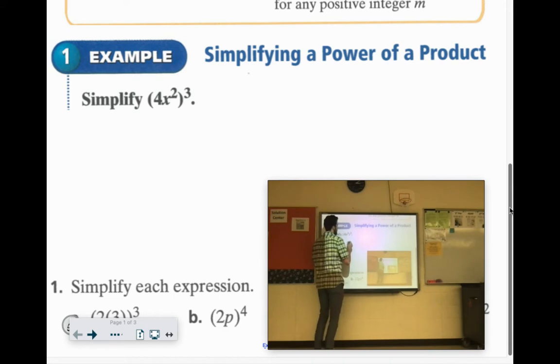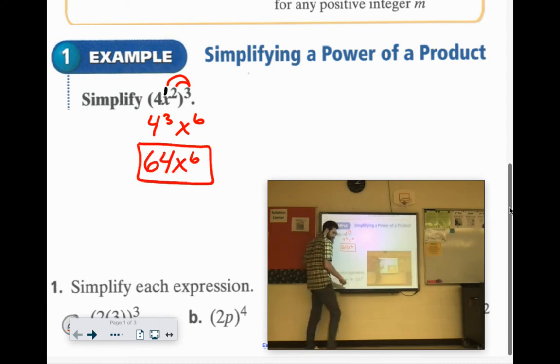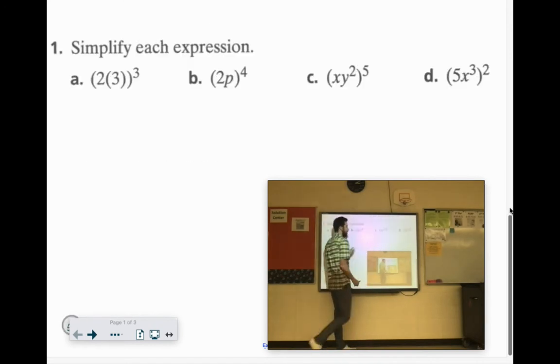So here, as it is, it's 4 to the 1st power, x to the 2nd power. All of that is being raised to the 3rd power, so we need to multiply both of the exponents by 3. So it would be 4 to the 3rd power and x to the 6th power. Now you don't leave 4 to the 3rd, you actually do that number. So 4 times 4 is 16, times 4 would be 64, x to the 6th power. Great. So again, just make sure you give everything in the parentheses that exponent.